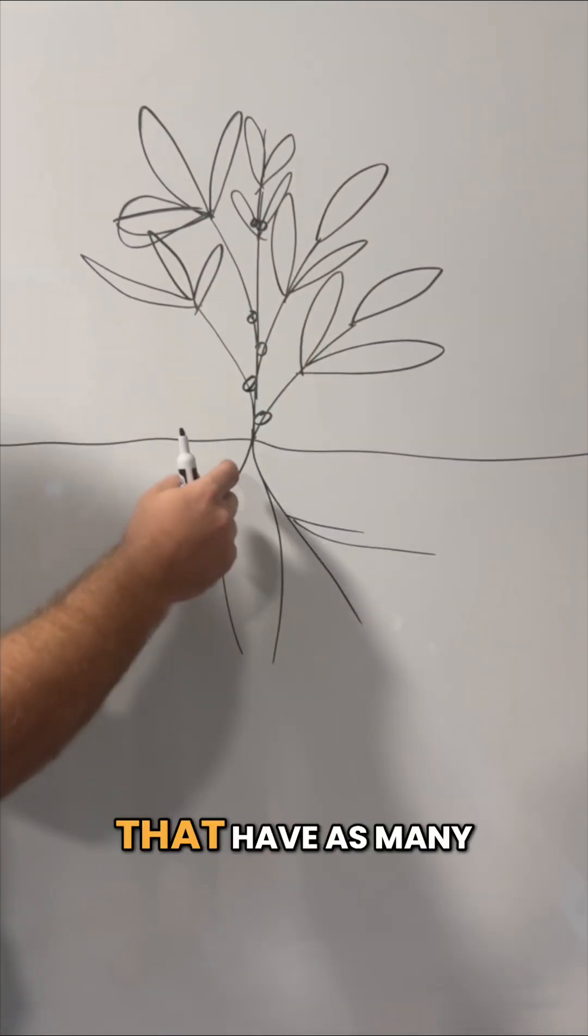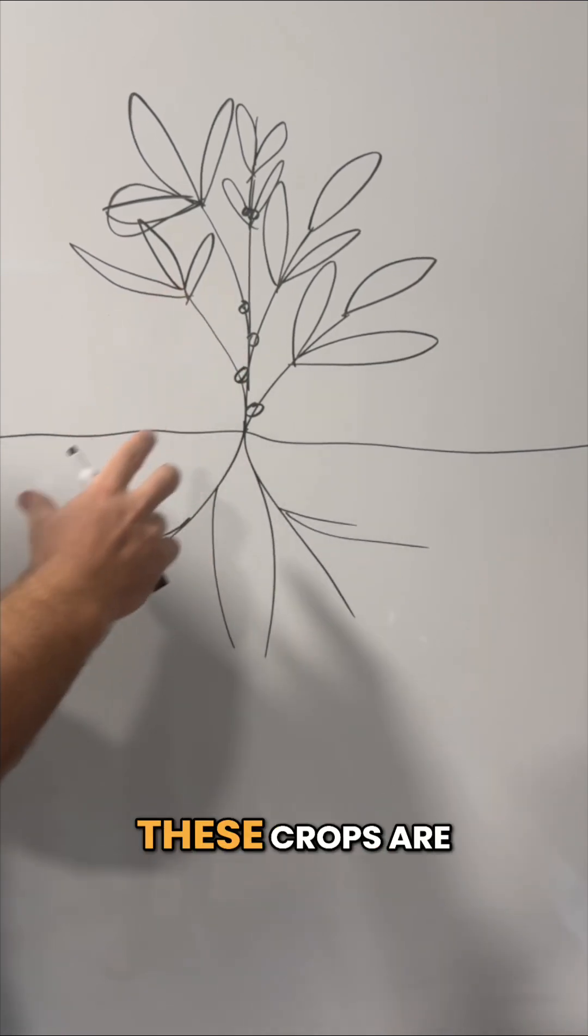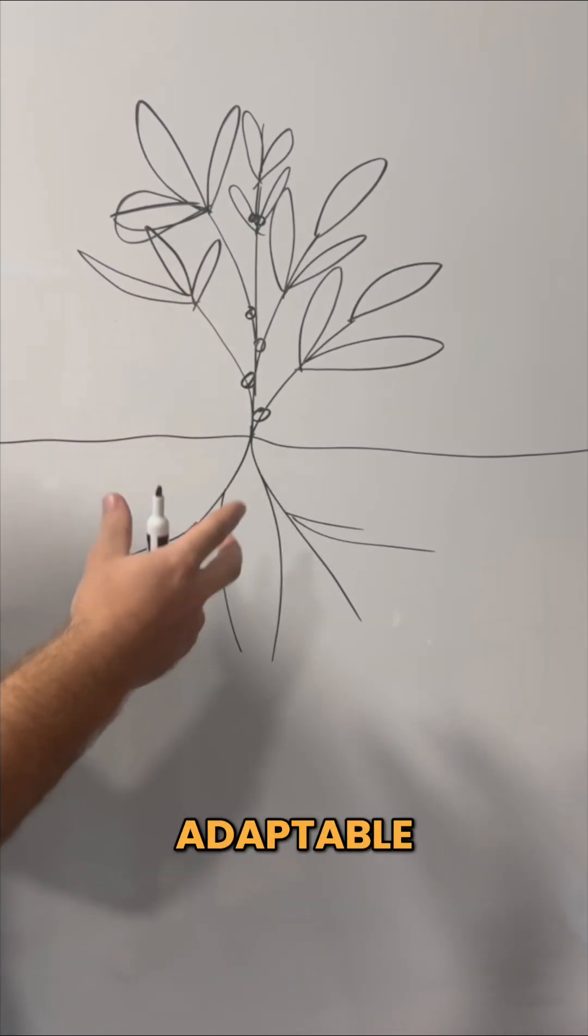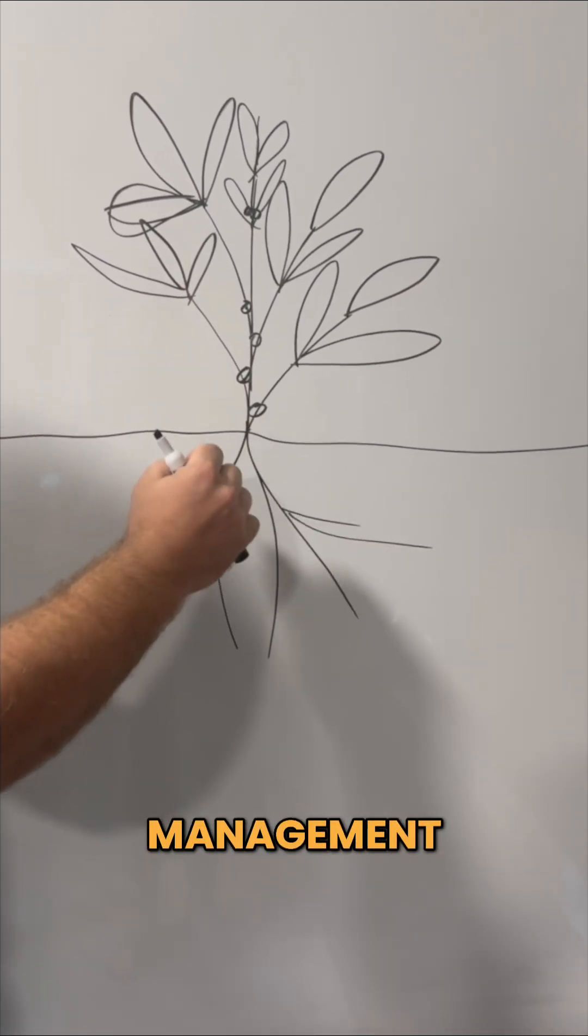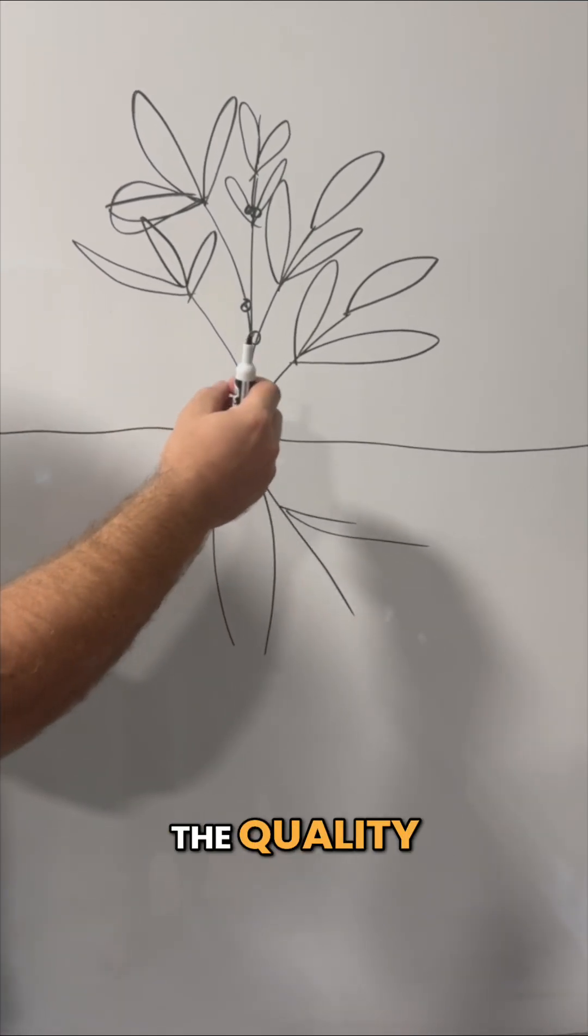I've seen soybean plants that have as many as a dozen pods per node, so it's very easy on these crops. These crops are very fluid, they're very adaptable, and with nutrition management, we can greatly increase the number of reproductive buds per node and the quality.